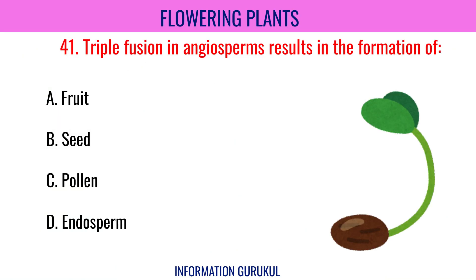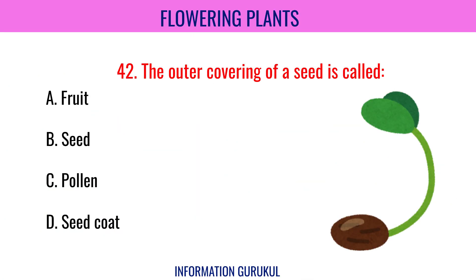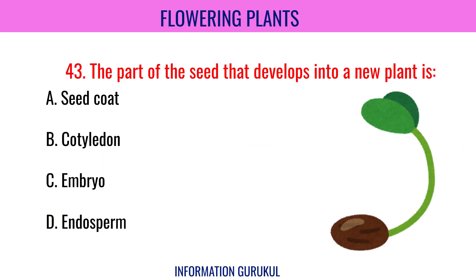Triple fusion in angiosperms results in the formation of Endosperm. The outer covering of a seed is called the Seed coat. The part of the seed that develops into a new plant is the Embryo.